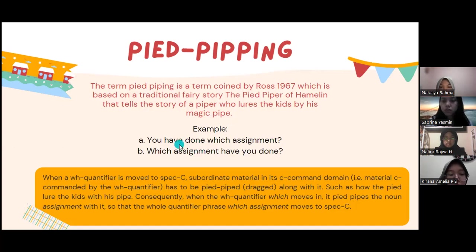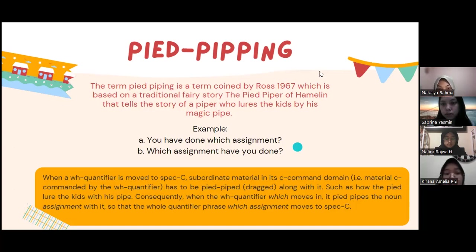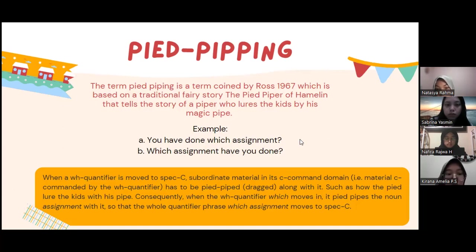It is because when a WH quantifier is moved to spec C, material C-commanded by the WH quantifier has to be pied-piped, or tracked along with it — such as how the piper lured the kids with his pipe. Consequently, when the WH quantifier moves, it pied-pipes the noun 'assignment' with it, so that the whole quantifier phrase 'which assignment' moves to spec C.